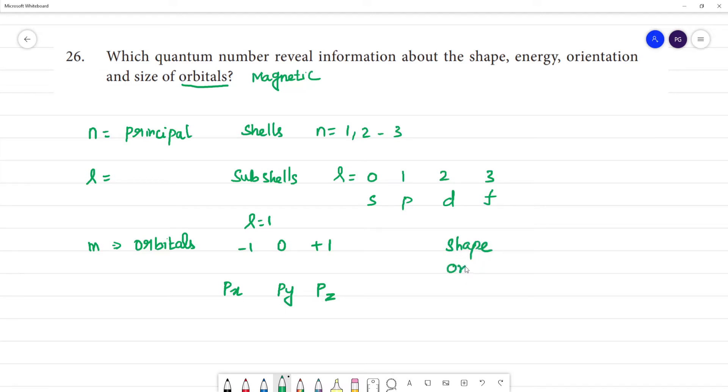Orientation mainly means orientation in the axis, where electron density is high. This is what it tells. Orbitals - magnetic quantum number, sub shells - azimuthal quantum number.